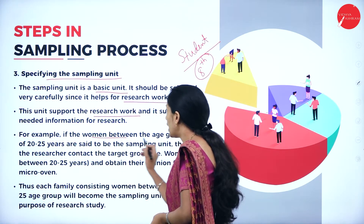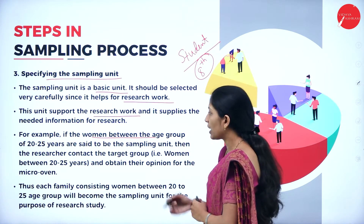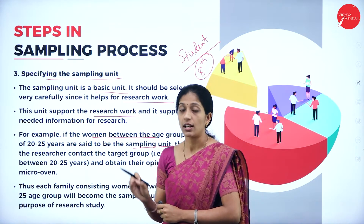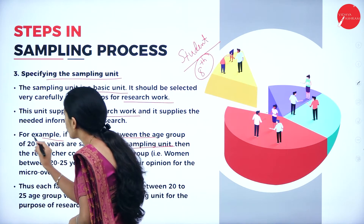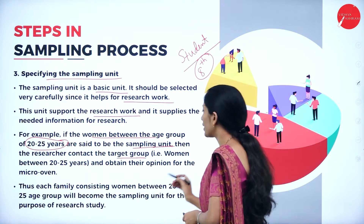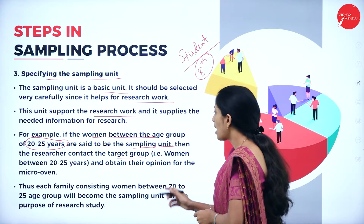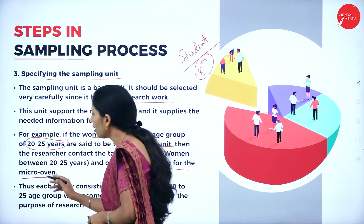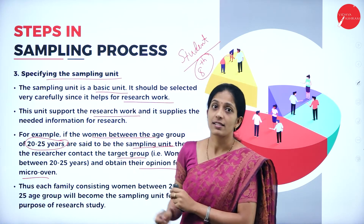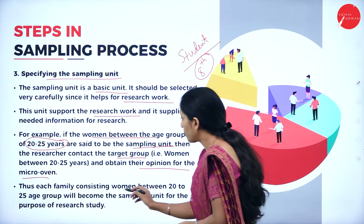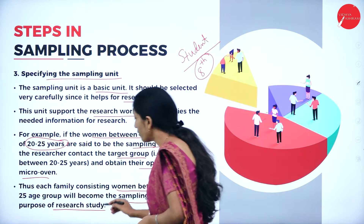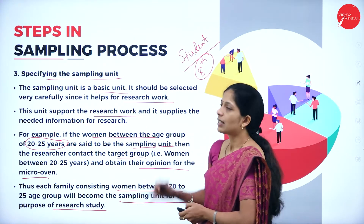For example, if women between the age group of 20 to 25 years are the sampling unit, then women is the target population but women between 20 to 25 years is the sampling unit. The researcher then contacts this target group — women between 20 to 25 years — and obtains their opinion for the micro-oven research. Each family consisting of women between 20 to 25 age group will become the sampling unit for the purpose of the research study.